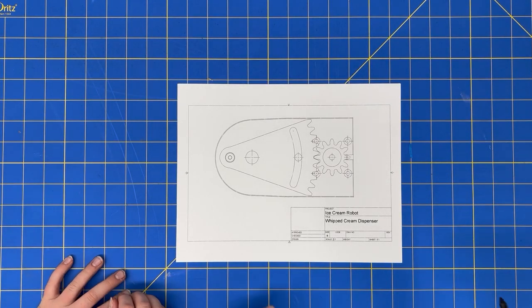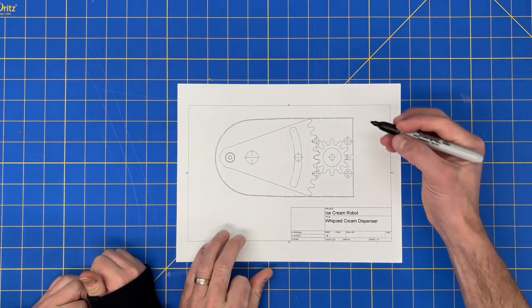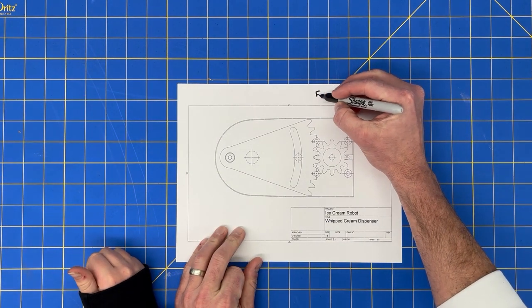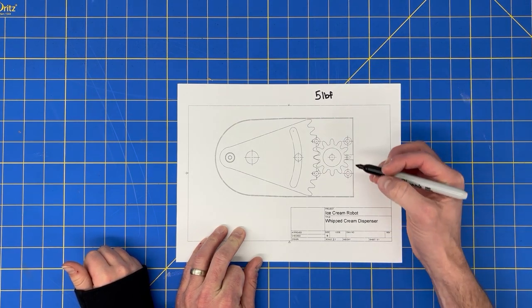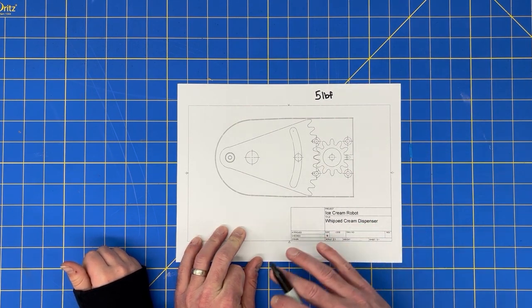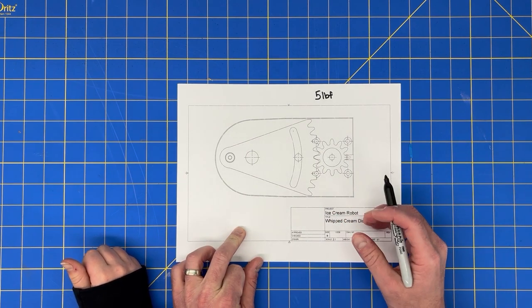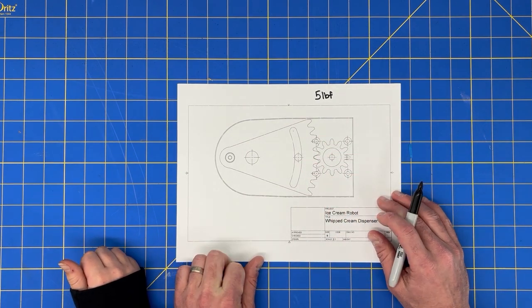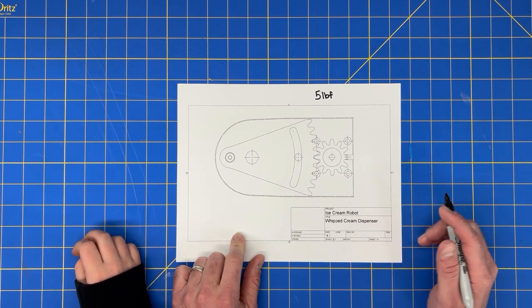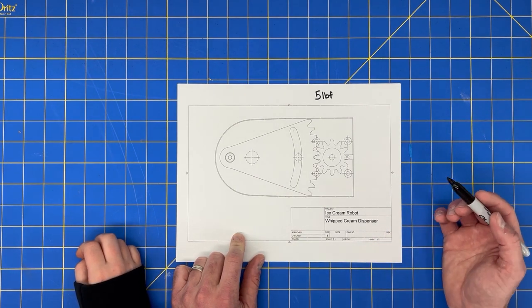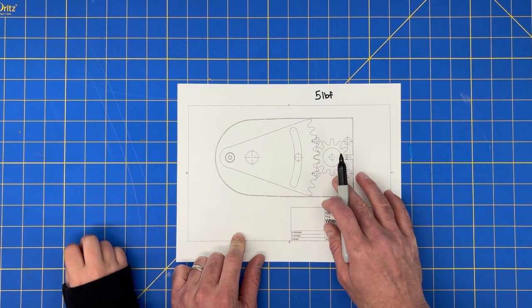So now that we know how much force it takes, we're just going to round up to about five pounds. So let's say it takes five pound F. F stands for force, five pound force. Sometimes people leave the F off, but we're really talking about it takes about five pound force to dispense or actuate the whipped cream. So we can start thinking about how to make a device to do that for us.